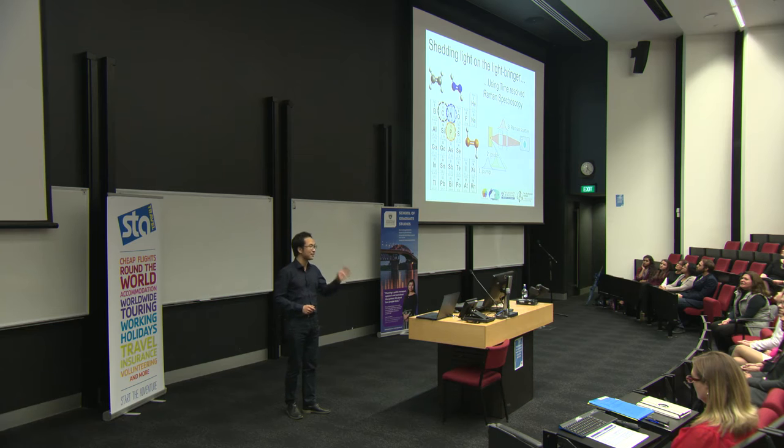This phenomenon — double bond formation — so trivial in carbon, has taken chemists until 1981 to replicate in phosphorus, an element just in the next row down.